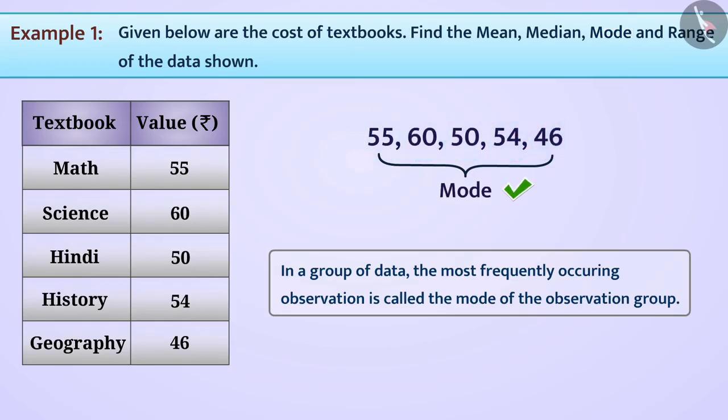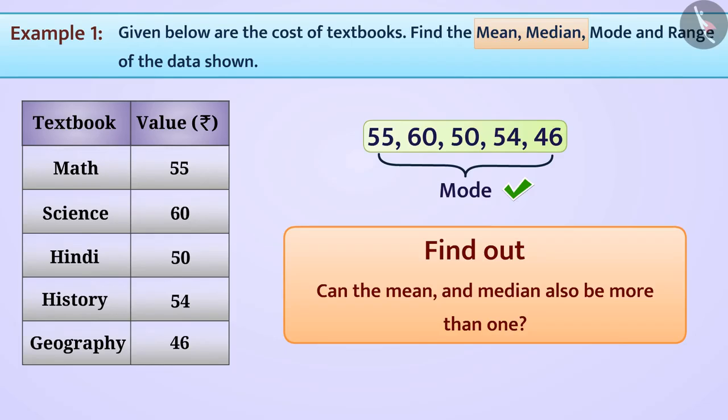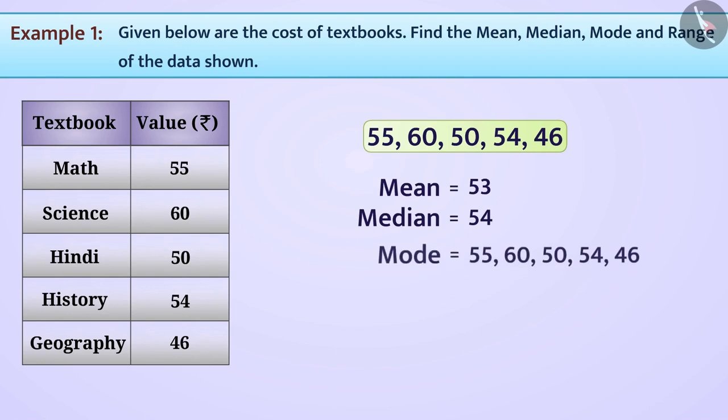This brings us to the conclusion that a data set can contain more than one modes. Do you think the mean and the median can also be more than one for a data set? Why don't you find that out by yourself? In this way, we have found the mean, median, mode and the range in the group of data shown.